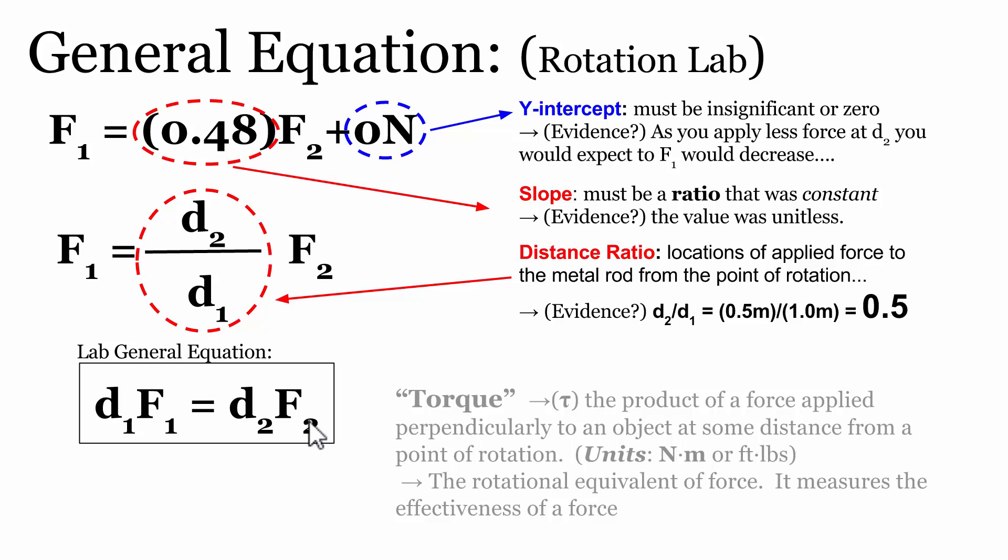In physics, we use the word torque to refer to the product of a force that tends to cause rotation applied at some distance away from a potential point of rotation. We use a Greek symbol called tau as the variable to represent torque, and torque is the product of a force applied perpendicularly to an object at some distance from a point of rotation. Its unit, since it's a distance times a force, is a newton meter in standard international units. Another unit of torque you might be familiar with is foot pounds.